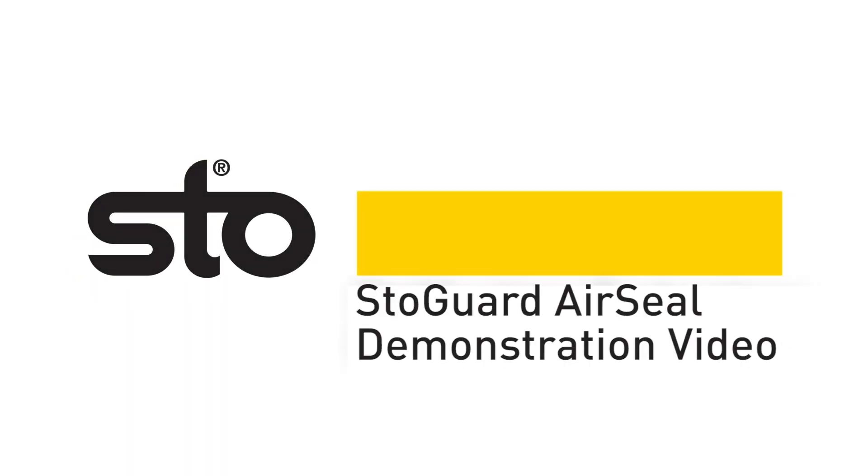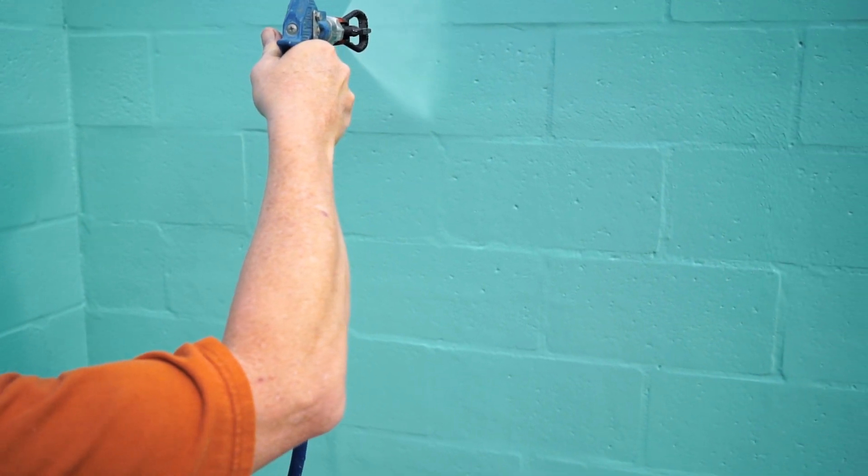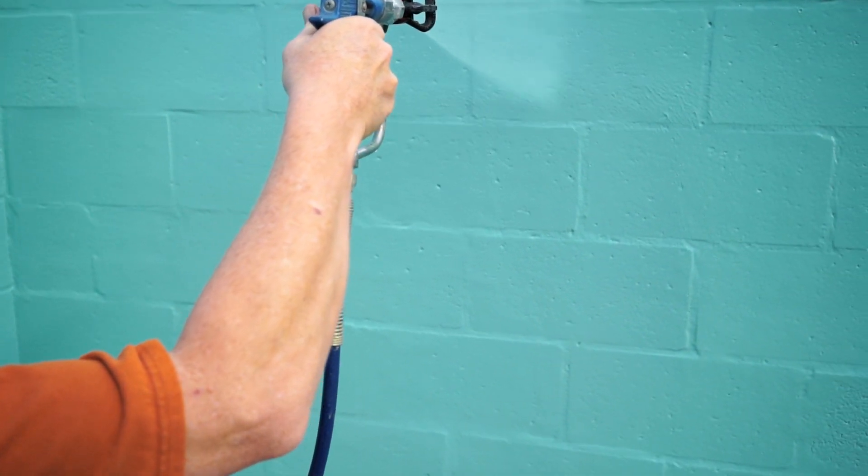Introducing StoGuard AirSeal. New NFPA 285 compliant StoGuard AirSeal is a high-build, vapor-permeable, fluid-applied membrane designed for application over CMU and sheathing.